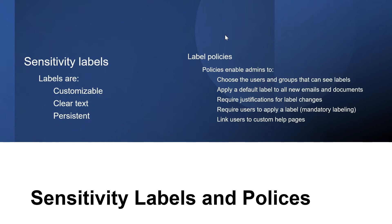After sensitivity labels are created, they need to be published to make them available to people and services in the organization. Sensitivity labels are published to users or groups through label policies. Sensitivity labels will then appear in Office apps for those users and groups.